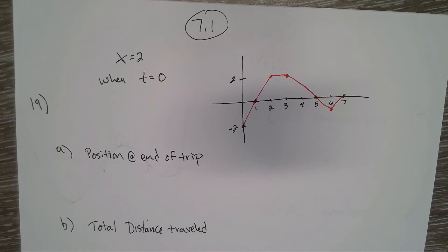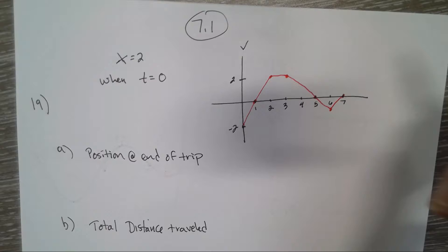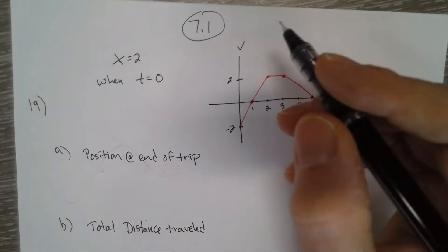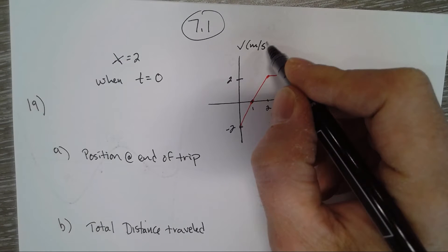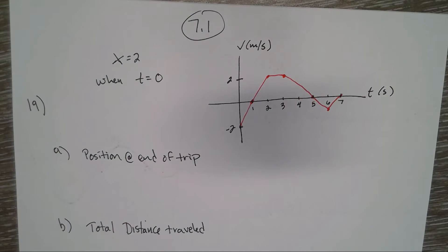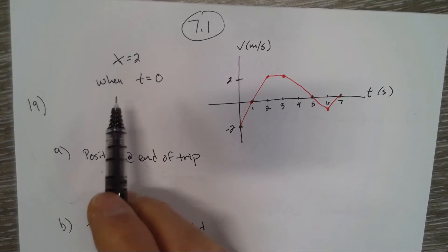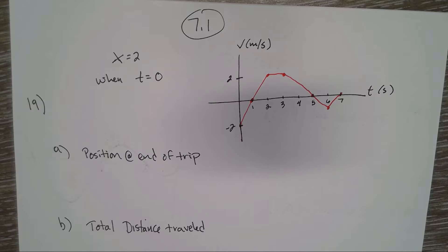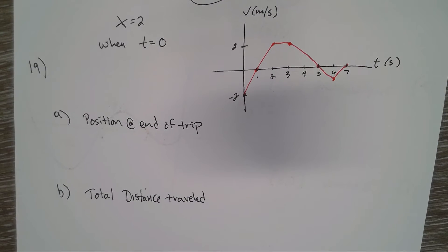7.1 number 19. The graph of velocity versus time - velocity in meters per second and time in seconds. The particle starts at x equals 2 when t equals 0, and we're trying to figure out where the particle is at the end of the trip and the total distance traveled.